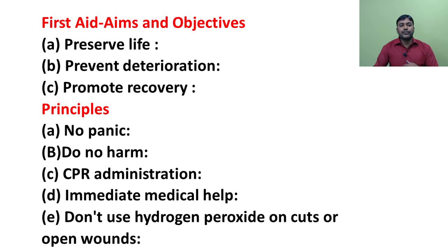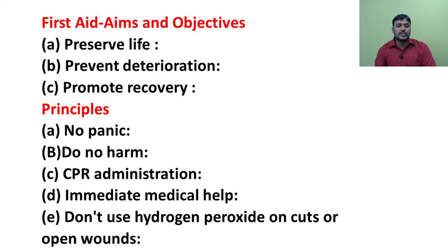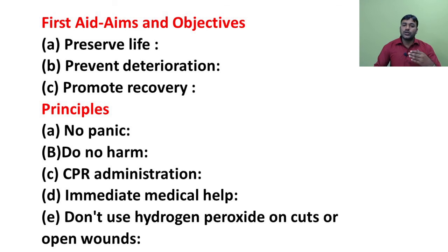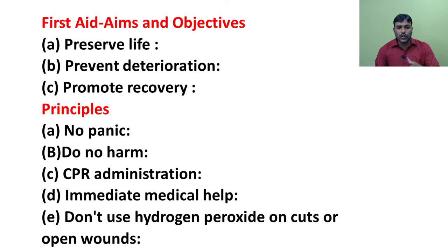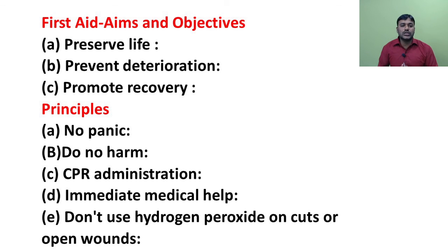CPR administration: CPR can save one's life by keeping vital organs oxygenated until paramedics arrive; timely CPR can play a vital role in saving the victim's life. Immediate medical help: the risk of dying from a heart attack is greatest in the first 30 minutes after symptoms begin; getting the victim to the nearest emergency facility as quickly as possible can help save their life. The shorter the time taken to shift the victim to emergency, the more likely the best treatment can be applied. Do not use hydrogen peroxide on cuts or open wounds — it is more irritating to tissues than helpful; soap, water, and appropriate bandages are best.